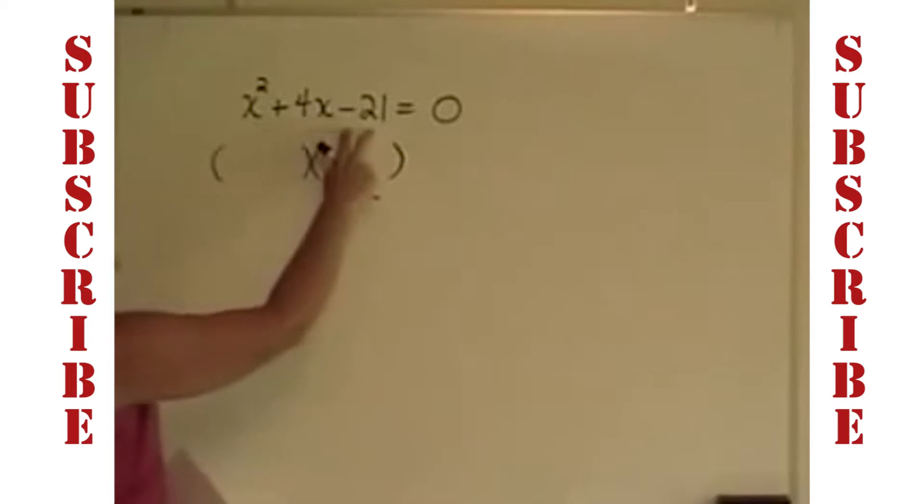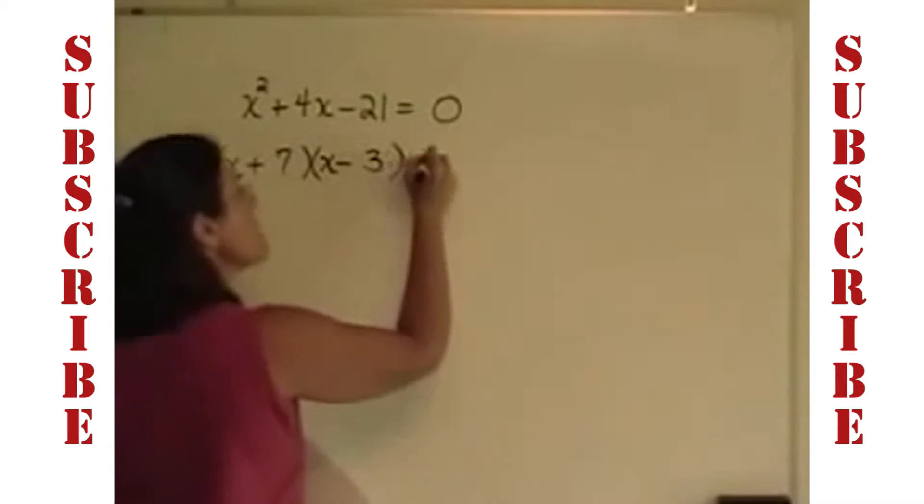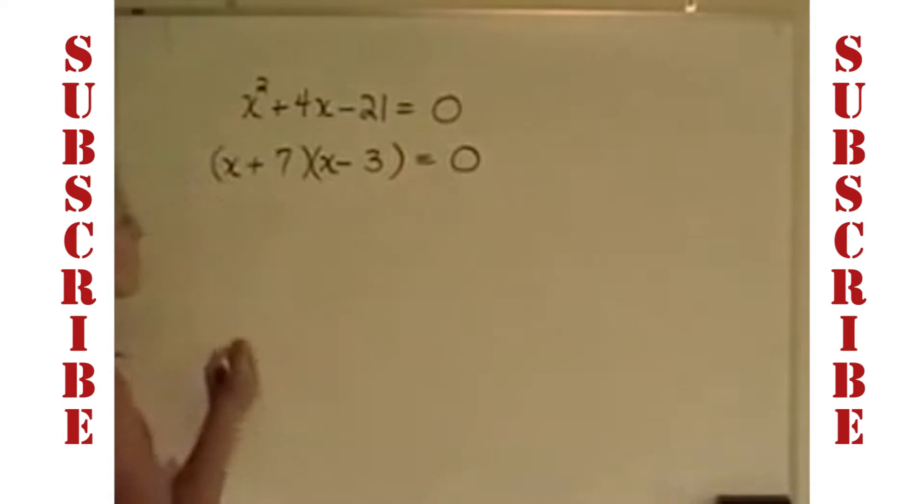In this case, this is a trinomial with a 1 in front of the x squared term. So this is a simpler trinomial to factor. I know that I need an x in the front of each of these. I now need two numbers whose product is negative 21. So one's got to be positive and one's got to be negative. Those two numbers have to add to be a positive 4. They appear to be 7 and 3. It looks as though the 7 will have to be positive, the 3 will have to be negative, in order for those two to add to be 4. It's now in factored form, and I can use the zero product rule.